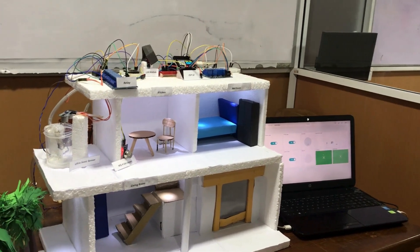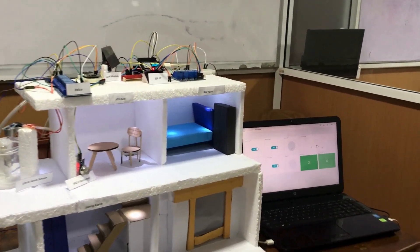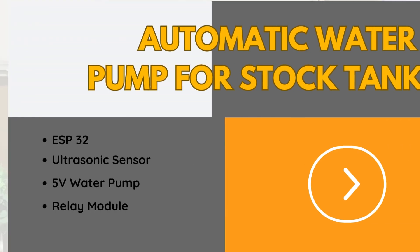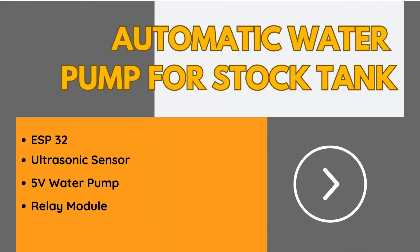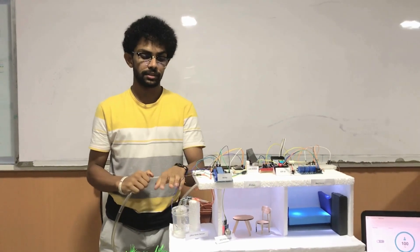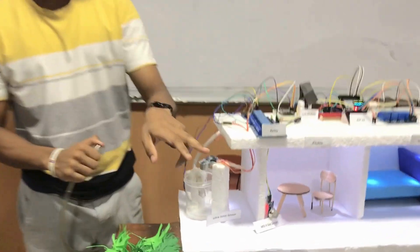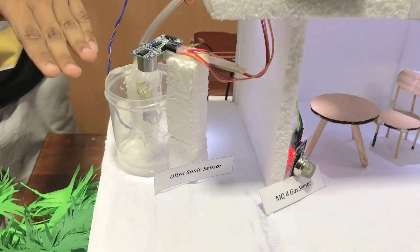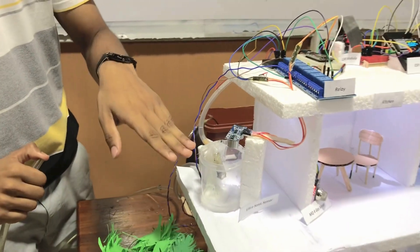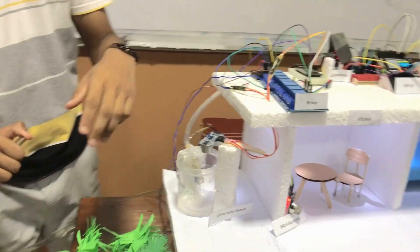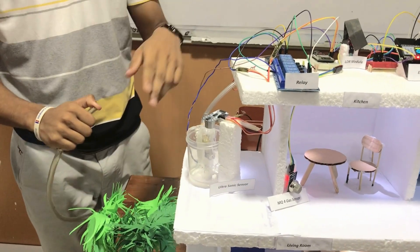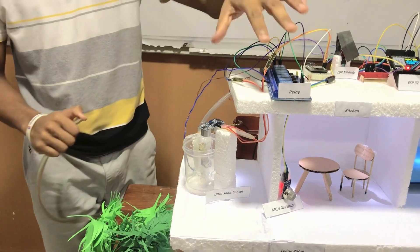So guys, this is my last system. This is an automatic water tank. We have used the ultrasonic sensor to detect the distance of the water levels. When the water is low, it will automatically turn on the pump using the relay module. I will demonstrate it for you here. The water is low and as you can see, it's automatically turning on.